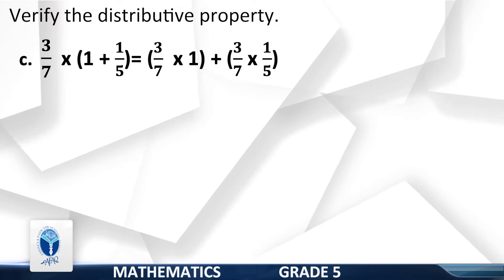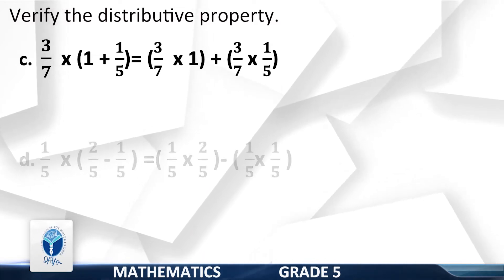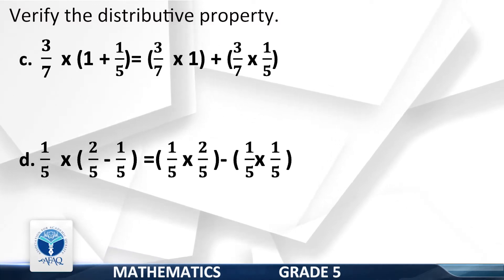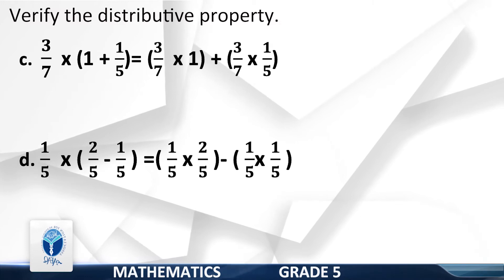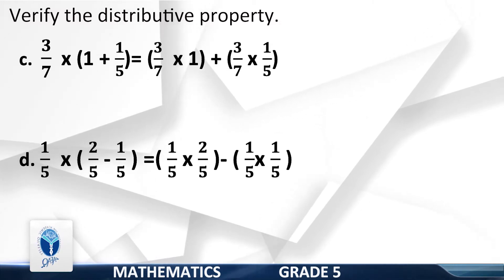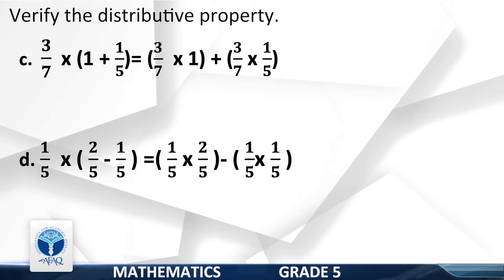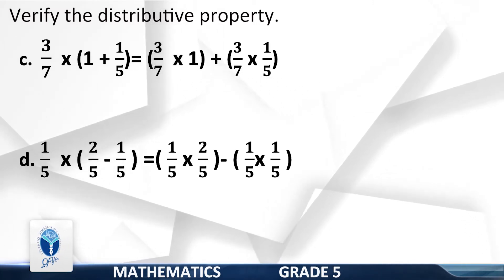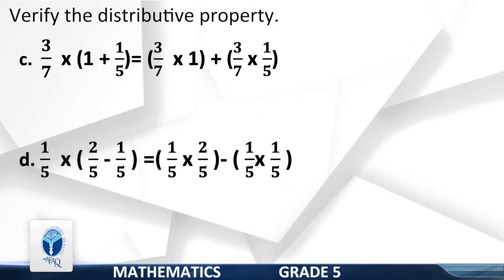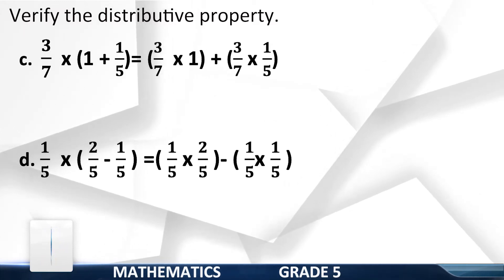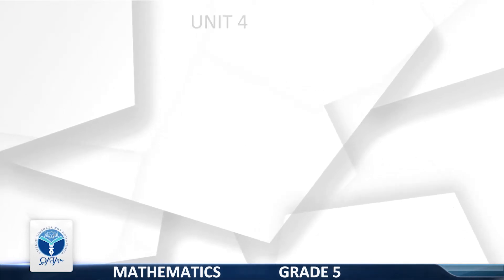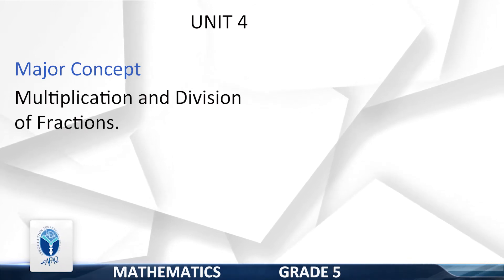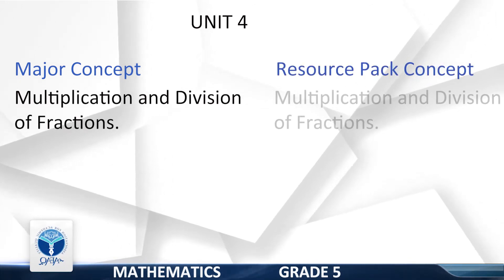D: 1/5 into (2/5 plus 1/5) equals (1/5 multiplied by 2/5) minus (1/5 into 1/5).